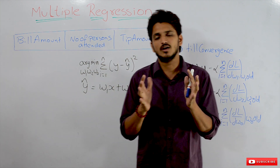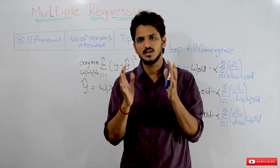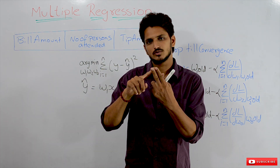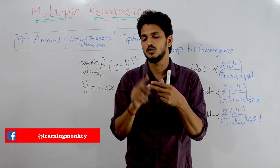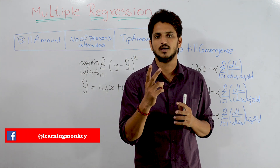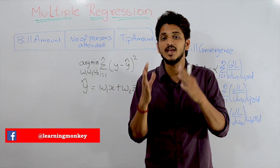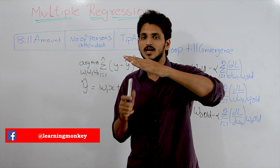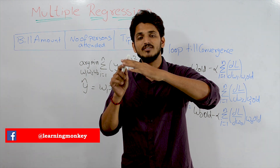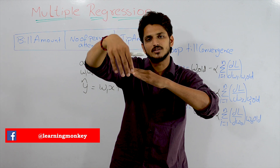In linear regression, we considered a dataset called bill amount and tip amount — two columns. We represented the data in a two-dimensional coordinate space. In linear regression, we identified a line passing through the data, and this line should have a minimum loss. Let's extend this concept to three-dimensional and n-dimensional — that is what we call multiple regression.